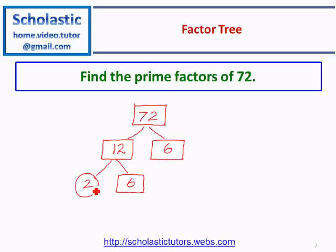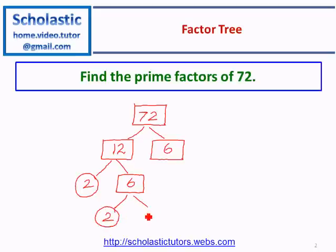We still have to find factors for that 6. The number 2 is already a prime number, so we can stop that branch here. The 6 can be written as 2, which is a prime number, times 3, which is also a prime number — so this is the end of these branches.